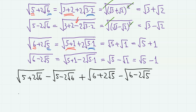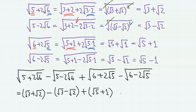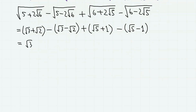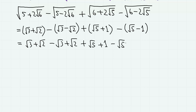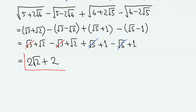Therefore, the expression can be written as (square root of 3 + square root of 2) - (square root of 3 - square root of 2) + (square root of 5 + 1) - (square root of 5 - 1), which simplifies to square root of 3 + square root of 2 - square root of 3 + square root of 2 + square root of 5 + 1 - square root of 5 + 1. The square root of 3 terms cancel out and the square root of 5 terms cancel out, so we finally have 2 × square root of 2 + 2. That's the first method using the denesting formulas.